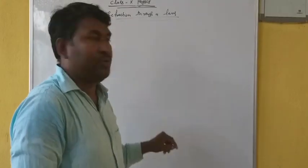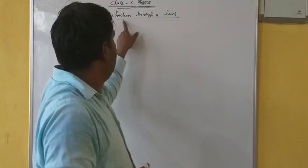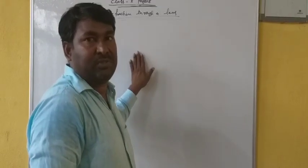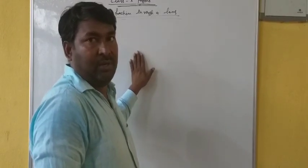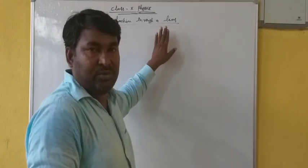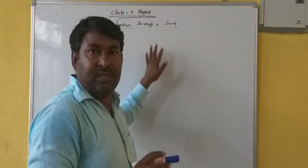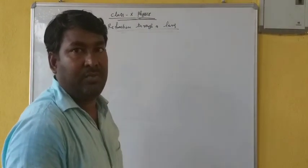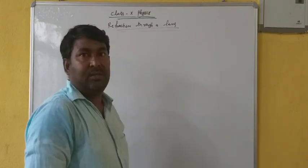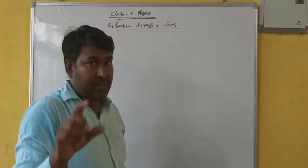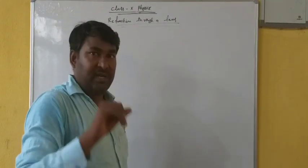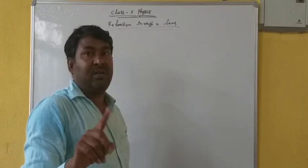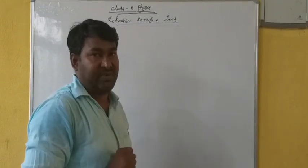Hello students, today I am going to explain to you about refraction through a lens. Since refraction through a prism we have seen already. First of all I would like to explain you about a lens. A lens is a transparent refracting medium which is bounded by either two spherical surfaces or one spherical and one plane surface.